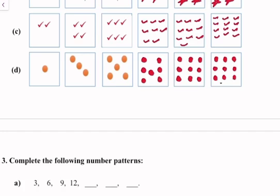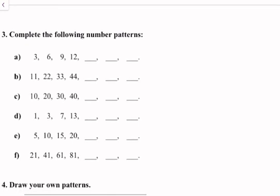Question number three: complete the following number patterns. Part A: three, six, nine, twelve, fifteen, eighteen, twenty-one.